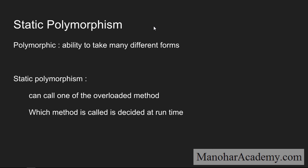Coming to static polymorphism — when we say polymorphic, we actually mean the ability to take many different forms. In the previous lesson we have seen that the same method is able to take different forms. They have different signatures, but nonetheless it is the same method. Because of that we call it polymorphism — the same method taking different forms.